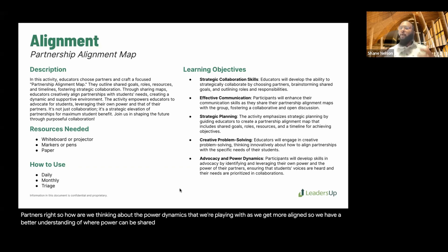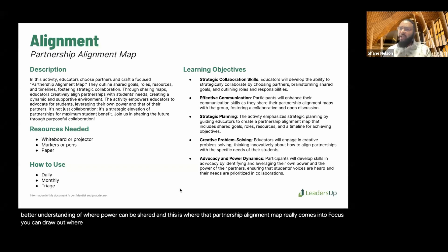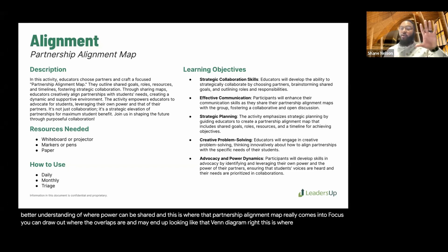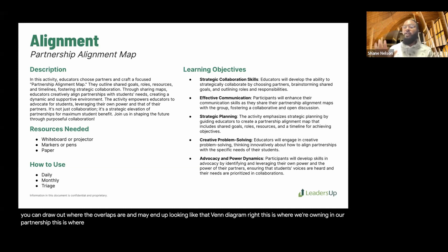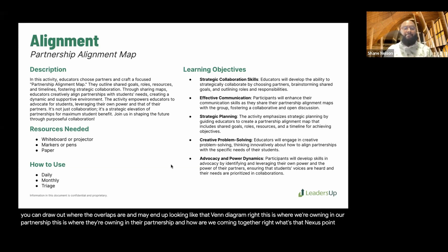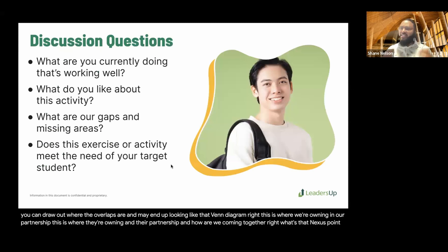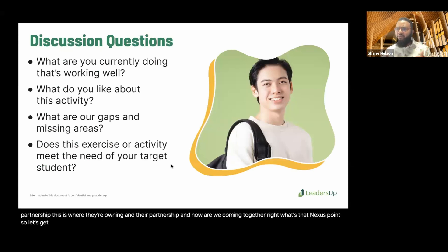This is where that partnership alignment map really comes into focus. You can draw out where the overlaps are — it may end up looking like a Venn diagram: this is where we're owning in our partnership, this is where they're owning in theirs, and how are we coming together? What's that nexus point? Let's get alignment from you — what are your feedback points here?